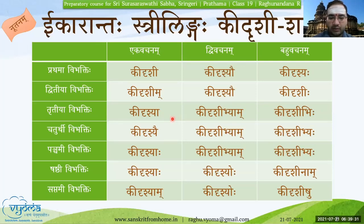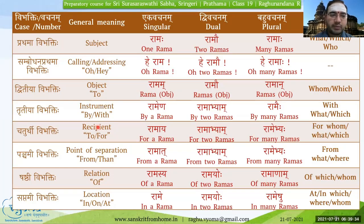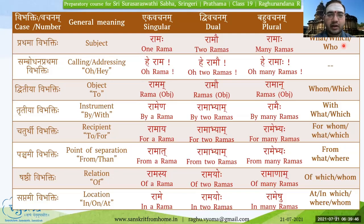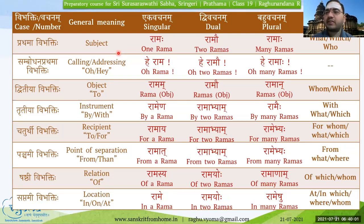Now we shall proceed to one more important concept. Though we have seen this table, I have added one more column towards the end, which is for the questioning word Kim Shabda — what will be the meaning of various Vibhaktis. As we know, Prathama Vibhakti stands for the subject — the person who is doing the action. So how will this change with respect to the questioning word?